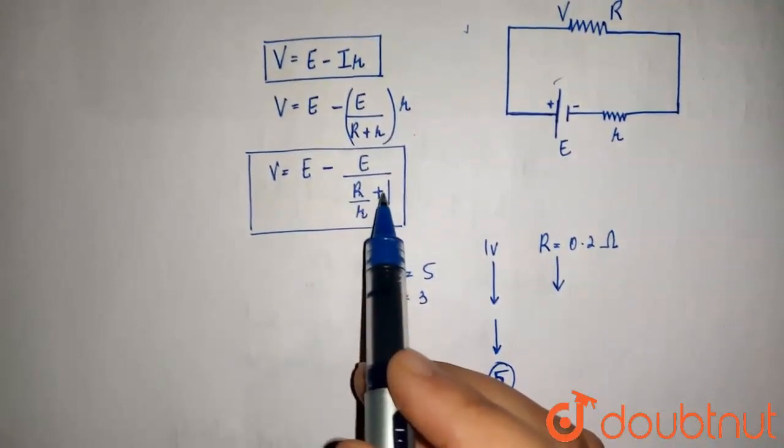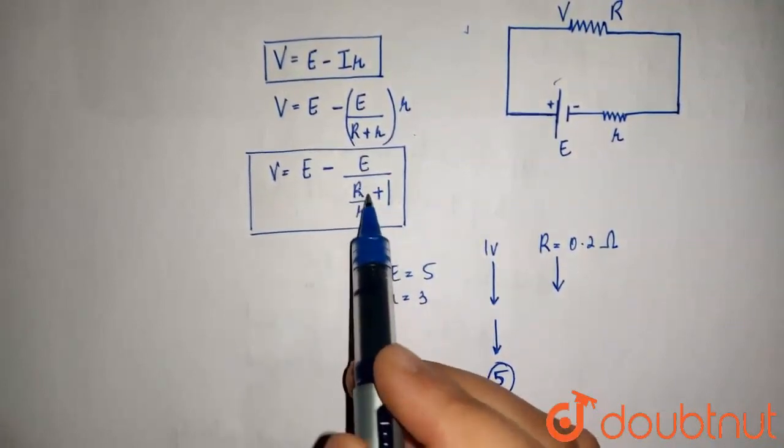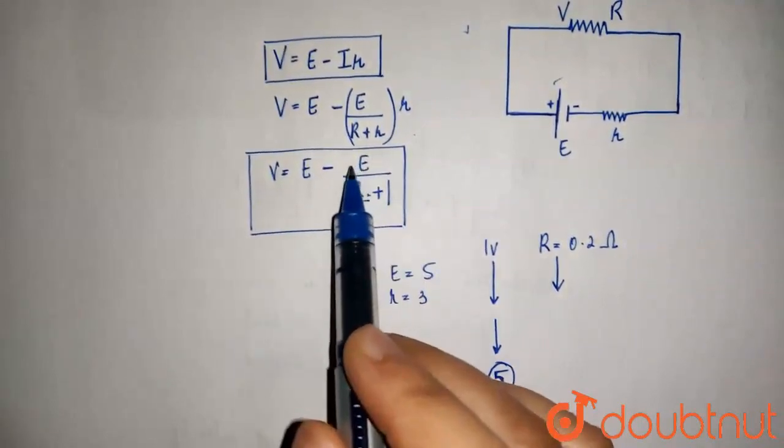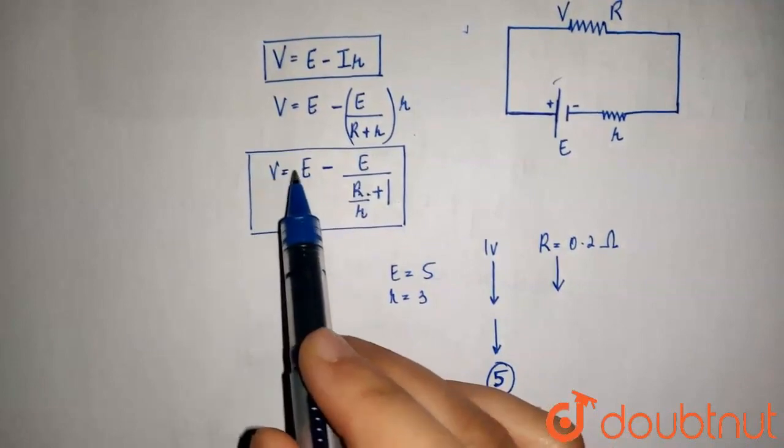So, infinity plus 1 is also infinity. So, E divided by infinity, anything divided by infinity is 0. So, this term becomes 0. We can see that V is equal to E.